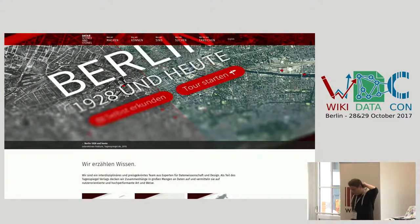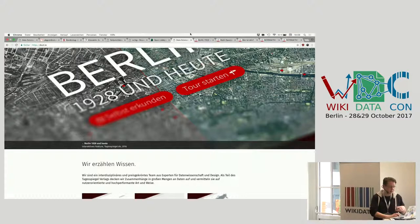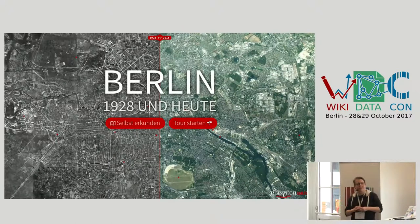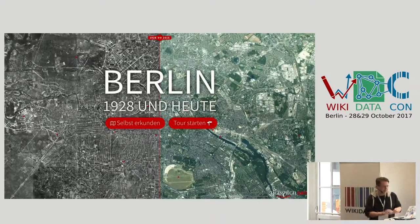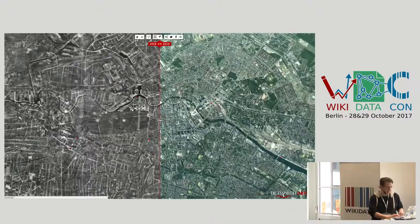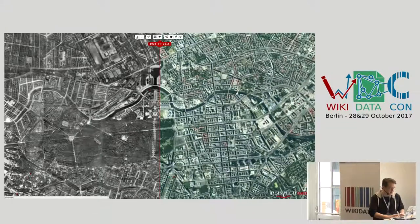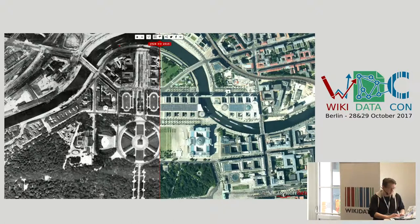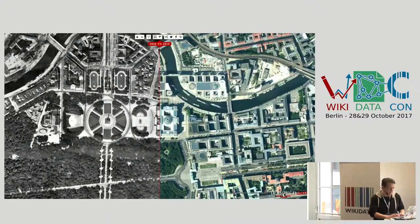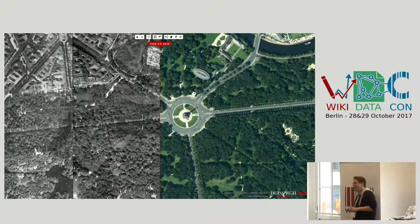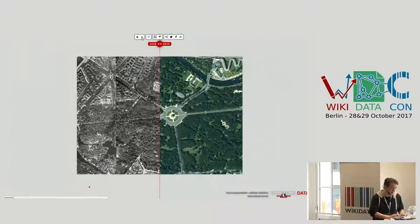These projects were from my previous company called Open Data City. Then we moved as a whole team to Tagesspiegel two years ago. One of our first projects there was finding old map data from Berlin from 1928 — almost 90 years ago. We made a simple web tool like Google Maps, but on the left side it's 1928 and on the right side it's 2015. You can zoom in and see that the Bundestag is still there, but the Siegesäule has moved.